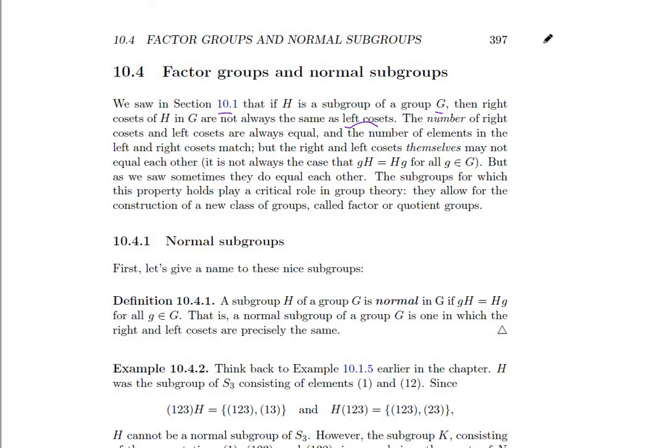I remember that the group was S3, and the subgroup was, I think it was the ID and say 1-2. And if you work through that, you'll find the left cosets and the right cosets are not the same.